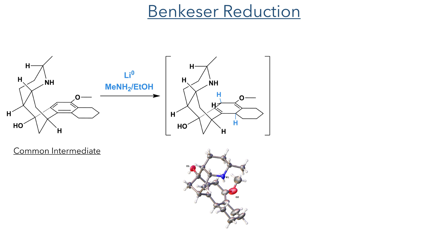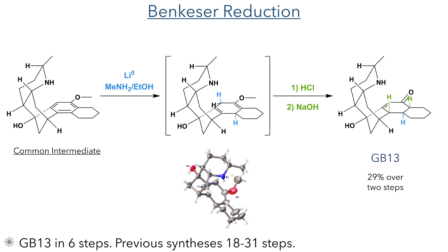From this same common intermediate they could also synthesise GB13. They first carried out a Benkeser reduction using lithium metal and methylamine in ethanol. This is a radical reduction and is similar to the more common Birch reaction. The product of this reduction could be isolated and characterised by X-ray crystallography. However, they could also take it forward without isolation and react it with hydrochloric acid. This hydrolyzes the enol ether forming the ketone and also isomerising the double bond to form the targeted enone of GB13 in a 29% yield over two steps.